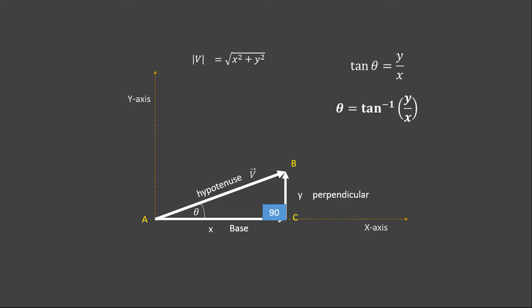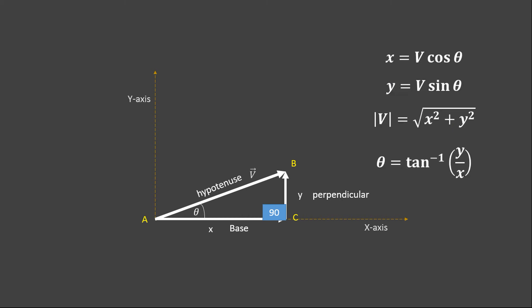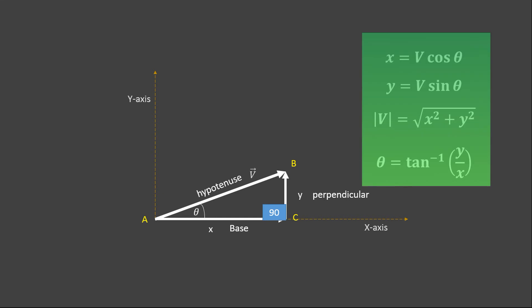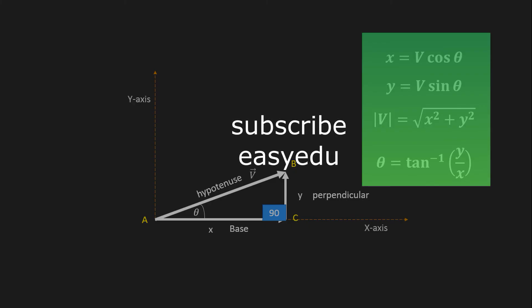For the calculation of theta, we use the tangent: tan theta equals perpendicular divided by base. Solving for theta, we get theta equals arctan(y/x). So we have determined the x-component, y-component, magnitude of vector V, and the angle theta it makes with the x-axis. Thank you for watching and don't forget to subscribe for more videos.